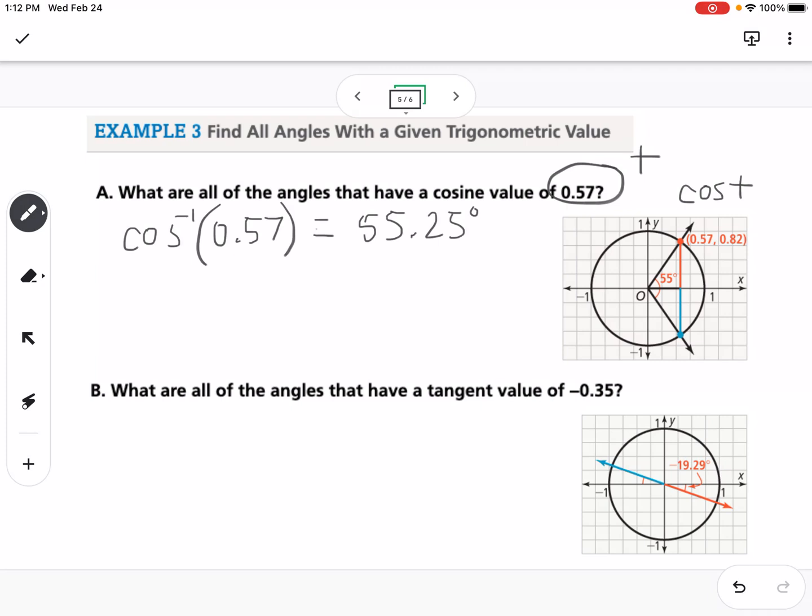And then I need to think, okay, what other quadrant is cosine positive? That would be in the fourth quadrant. Cosine's positive. So I'm going to reflect my angle over into the fourth quadrant. And I'm going to find this new angle that starts at zero and goes all the way around to that line. So that would be 360 minus 55.25, which we could call negative 55.25, or we could call it 304.25 degrees.